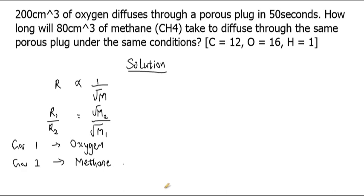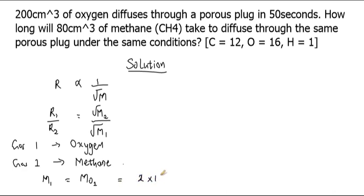Let's start with the molecular mass of each of the gases. The first gas is oxygen. Oxygen gas is O₂, so we can say M₁ — also written as M(O₂) — is the molecular mass of oxygen gas. O₂ has two atoms of oxygen, so we calculate: 2 times 16, which is equivalent to 32.